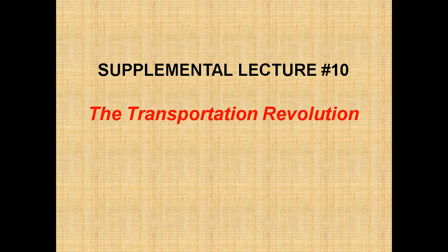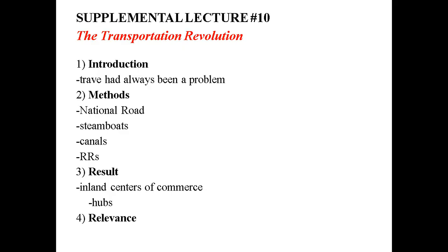Now a supplemental lecture on the Transportation Revolution, number 10. Here's the outline: introduction — travel had always been a problem; methods — national roads, steamboats, canals, railroads. Those are the four new methods that created this transportation revolution, and you'll need to give details about all four. The result: it created inland centers of commerce, some of which became hubs.